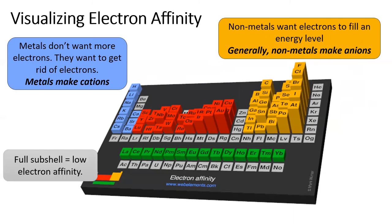Look closely and you can see that elements with full or half-full subshells have low to no electron affinity. This is apparent at the end of the S block, at the end of the D block, and halfway through both the D block and the P block.